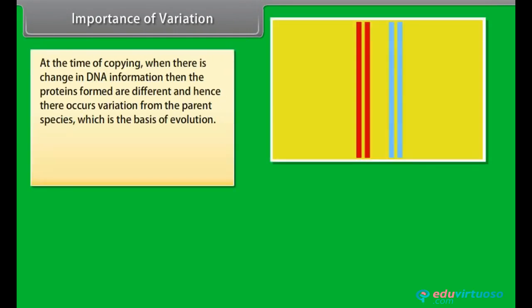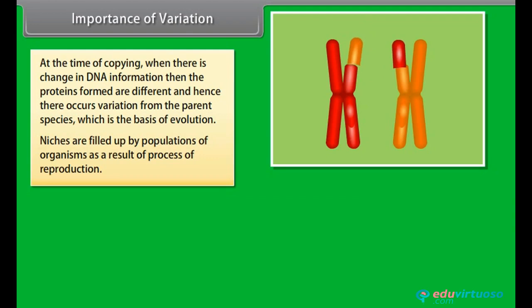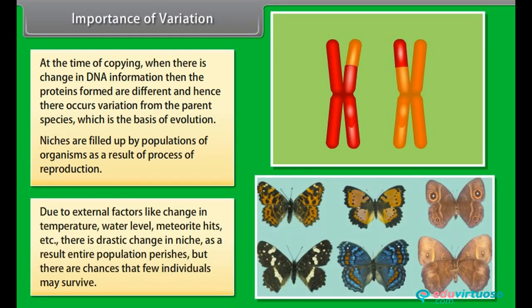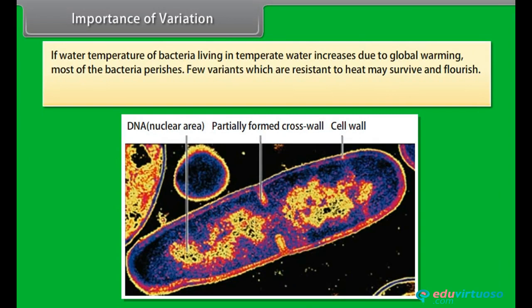At the time of copying, when there is a change in DNA information, the proteins formed are different, and hence variation from the parent species occurs, which is the basis of evolution. Niches are filled up by populations of organisms as a result of reproduction. Due to external factors like change in temperature, water level, or meteorite hits, there is drastic change in the niche. As a result, an entire population may perish, but a few individuals with variation may survive. For example, bacteria living in temperate water: if temperature increases due to global warming, most bacteria perish, but few heat-resistant variants survive and flourish. So variation is important for the survival of species.